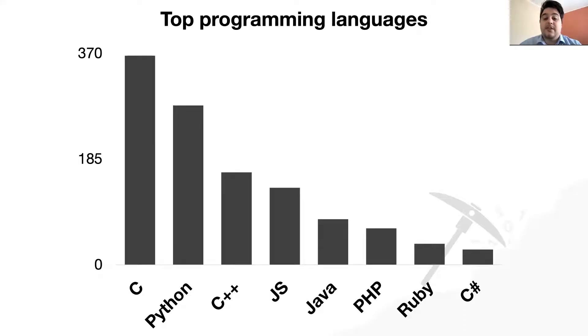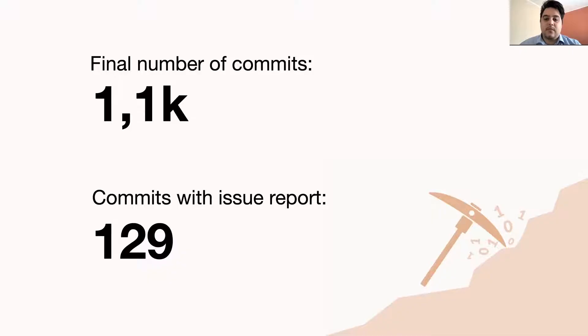Also, we filtered the commits considering the top 10 file types in terms of modifications, belonging to eight different programming languages, where C and Python are the most frequent. At the end, in our dataset, there are about 1100 commits, with a total of 129 commits with issue report.